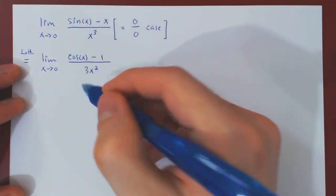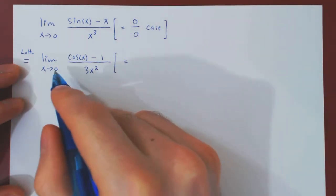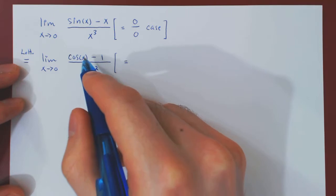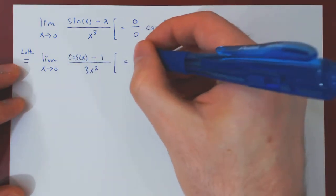Well, to see what we're dealing with, let's check our case. As x goes to 0, cos(x) by continuity will approach cos(0), which is 1, minus 1 is 0.